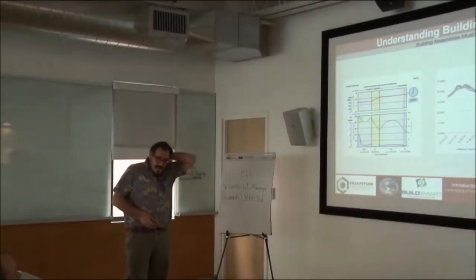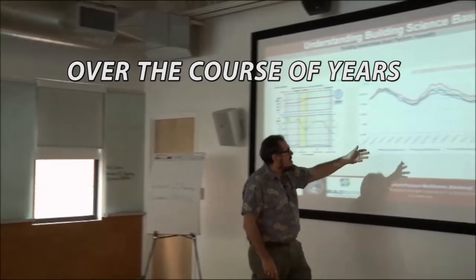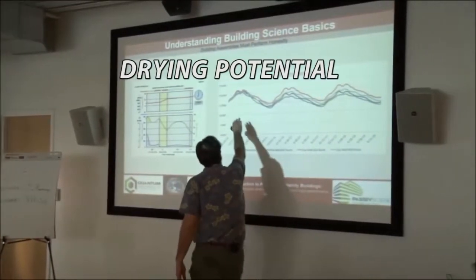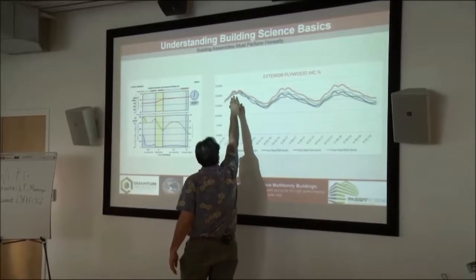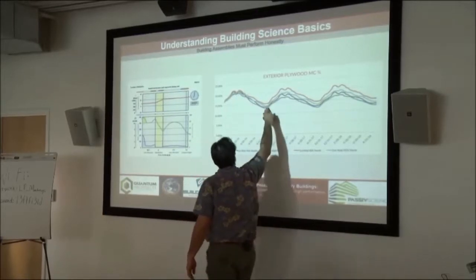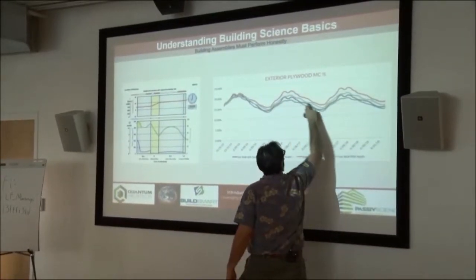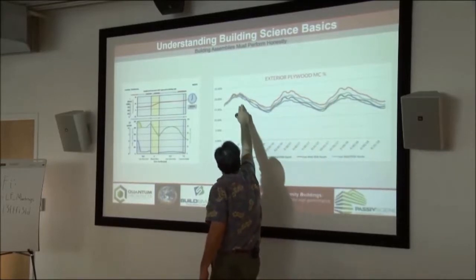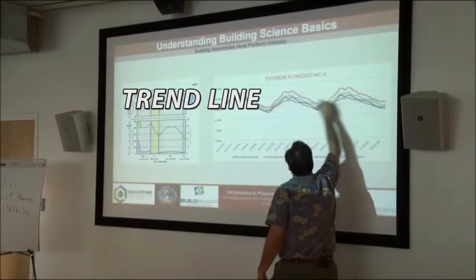When we analyze a building, we want to look at it over the course of years. This one's looked at over three years. We want to look at the drying potential — here this moisture is over 20%, but it dries out to 13. Then it goes up again, then down again and up again. We're looking at the trend line. Over the course of years, this moisture content is going down.